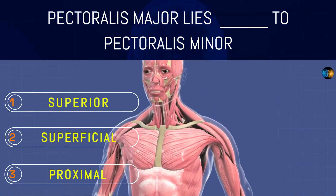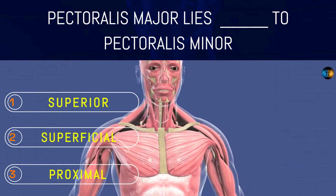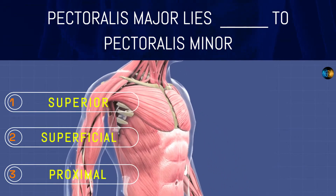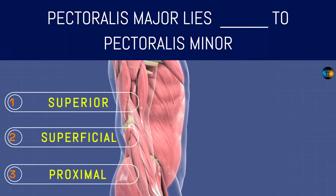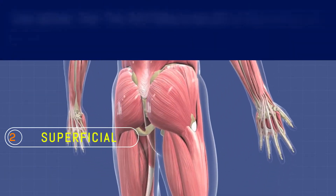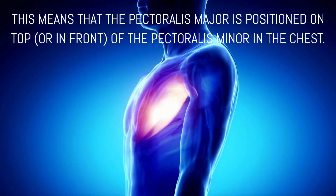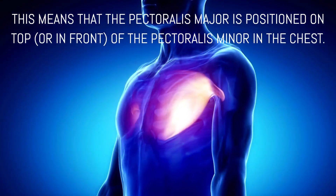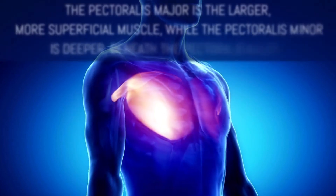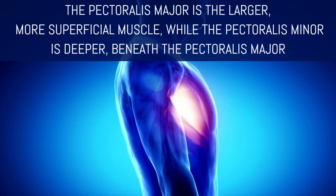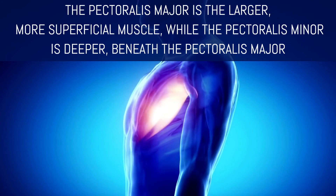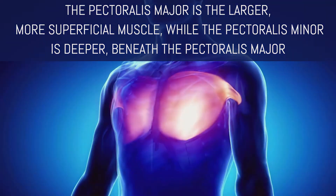Pectoralis major lies where in relation to pectoralis minor? Superior, superficial, or proximal? Superficial. This means that the pectoralis major is positioned on top, or in front, of the pectoralis minor in the chest. The pectoralis major is the larger, more superficial muscle, while the pectoralis minor is deeper, beneath the pectoralis major.